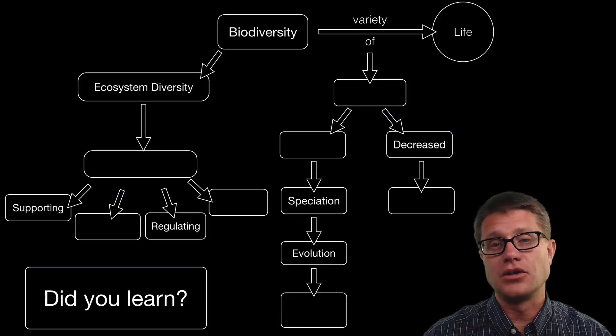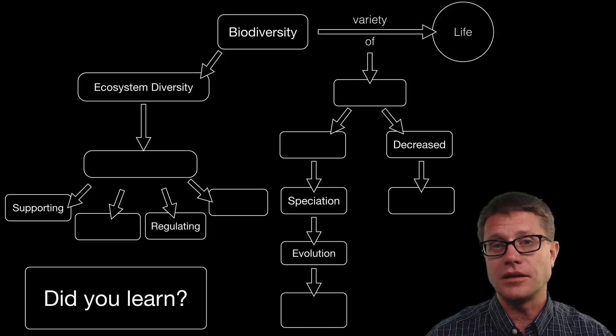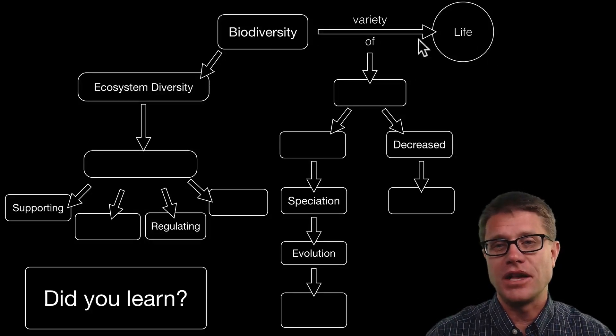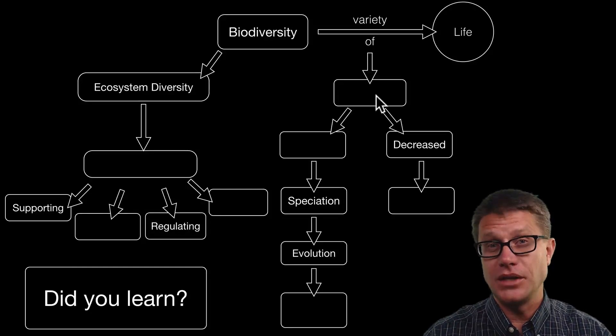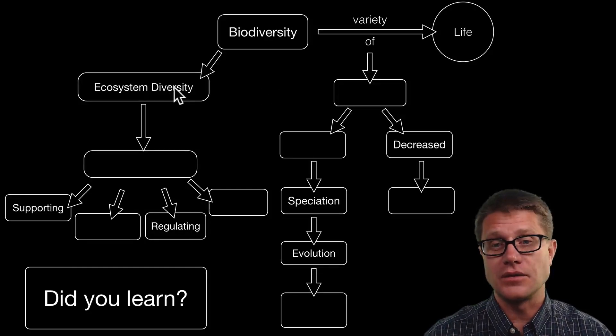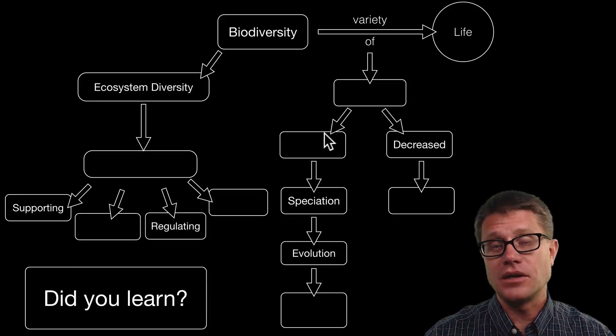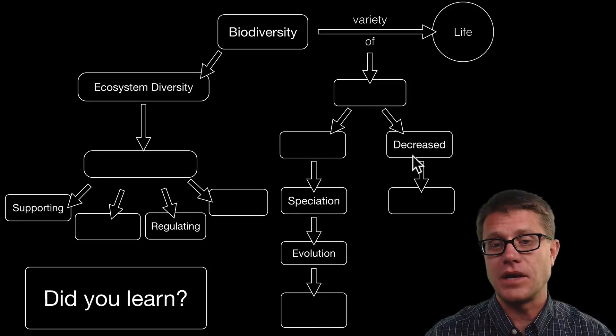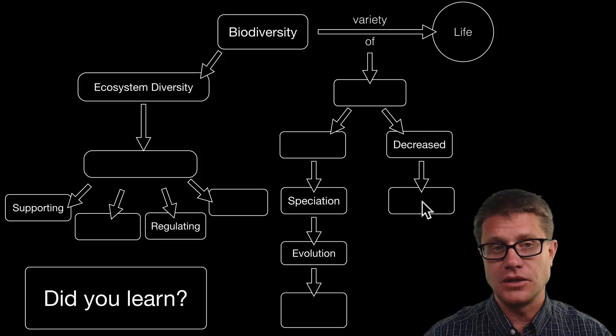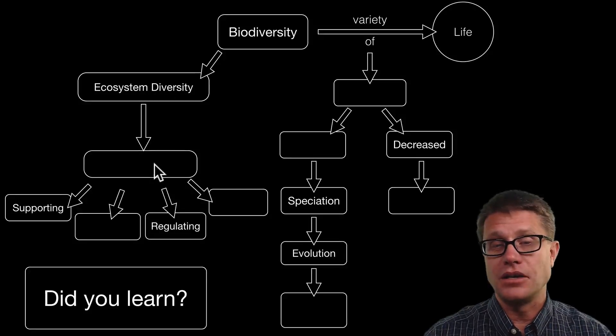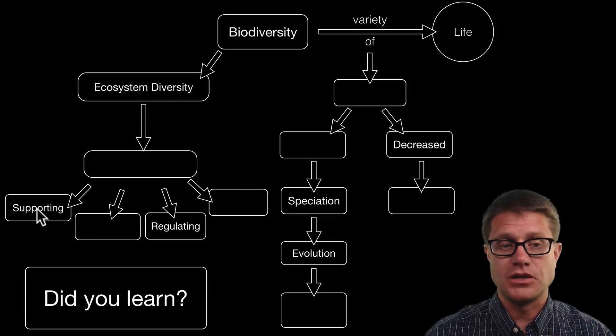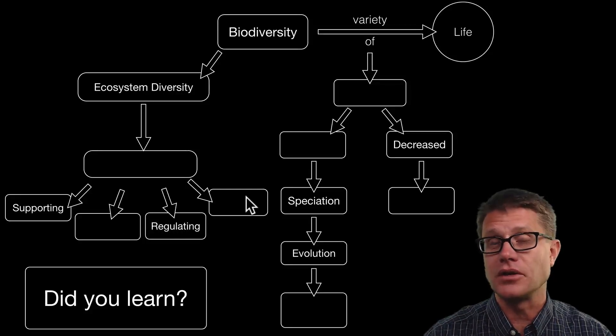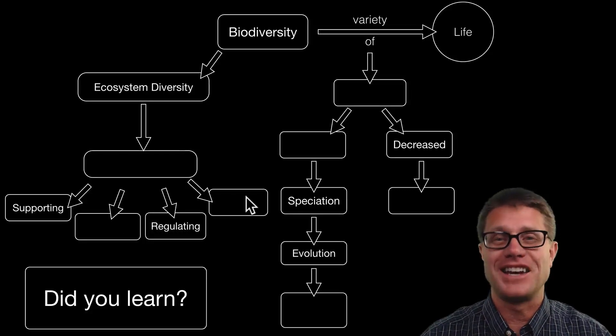And so did you learn the following? Could you pause the video and fill in all the blanks? If not let me do it for you. Biodiversity is a variety of life. We could measure that in the variety of species, also genes and ecosystems. How do we increase the number of species? Speciation evolution through natural selection. How do we decrease it? Through extinctions. Ecosystems provide ecosystem services that could be supporting us, provisioning us, regulating and cultural services. So I hope you got that and I hope that was helpful.